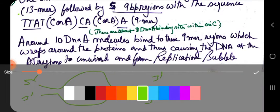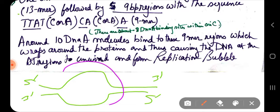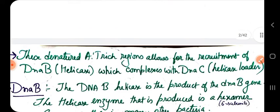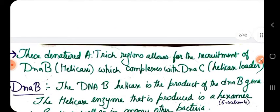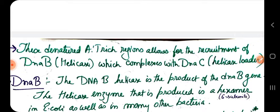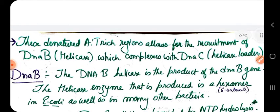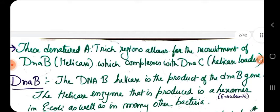This is the replication bubble — the region where unwinding has taken place, initiated by DnaA. These denatured AT-rich regions then allow recruitment of DnaB (helicase), which complexes with DnaC (the helicase loader).